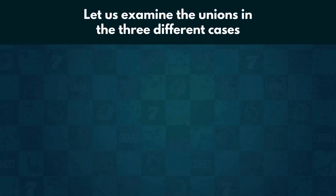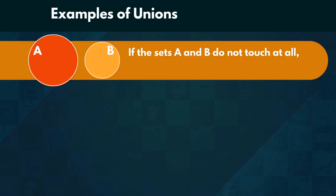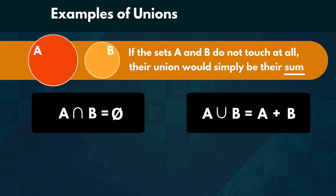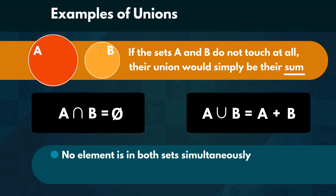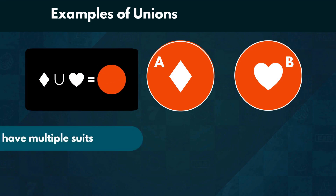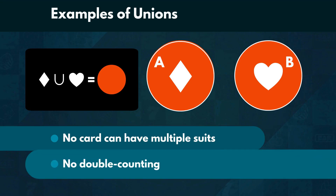Let us examine what the unions would be in the three different cases. If the sets A and B do not touch at all, then their intersection would be the empty set, and therefore their union would simply be their sum. No element is in both sets simultaneously, so we do not need to worry about double counting. Going back to the card example, the union of hearts and diamonds would be all red cards. No card can have multiple suits, so we need not worry about counting a card twice. Therefore, the number of red cards equals the union of cards which are either diamonds or hearts.